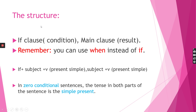The structure: as I said, the zero conditional constitutes of two parts. The first part we call the if clause or the condition, and the second part we call the main clause or the result. Remember, you can use 'when' instead of 'if.' The formula is: if + subject + verb in the present simple, then subject + verb in the present simple. In zero conditional sentences, the tense in both parts of the sentence is the simple present.